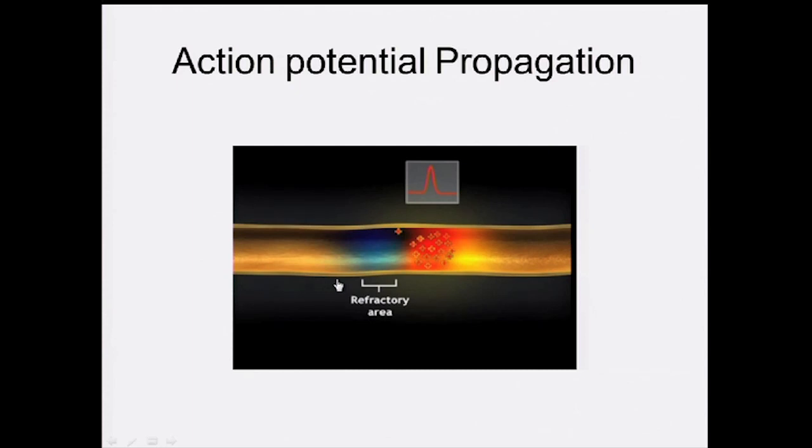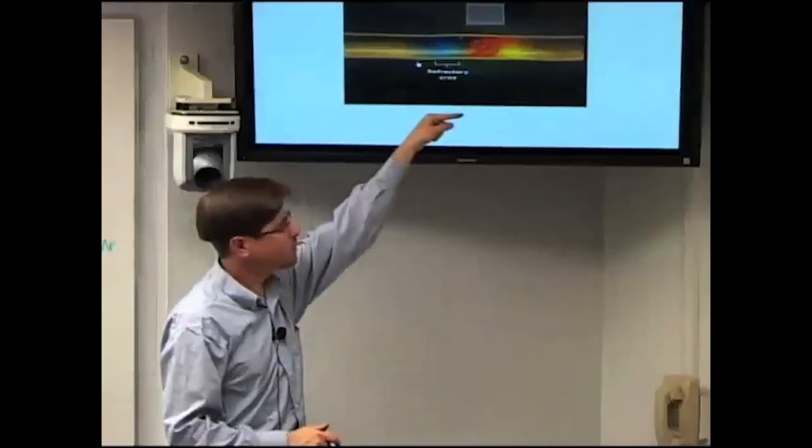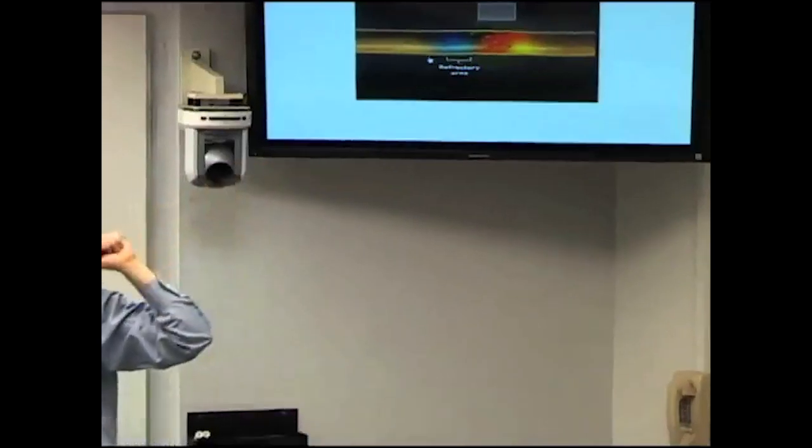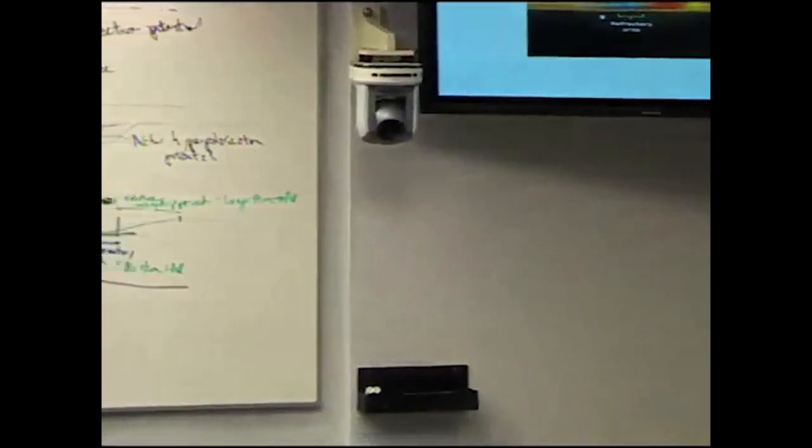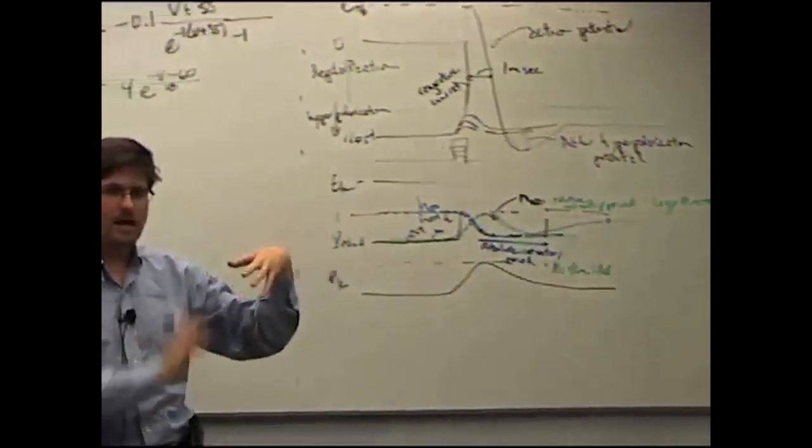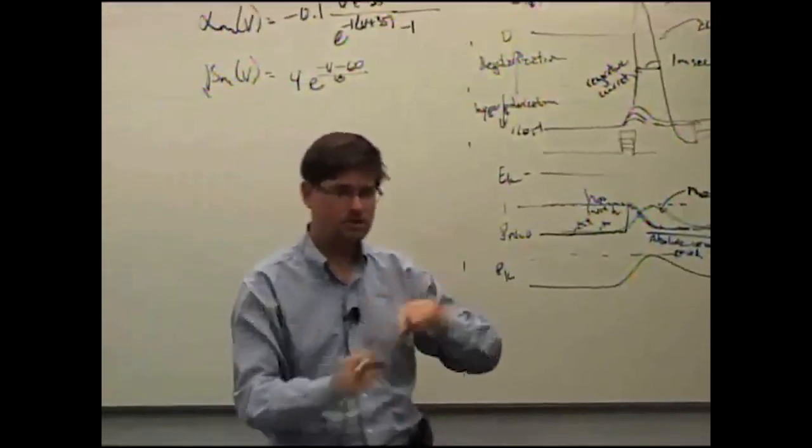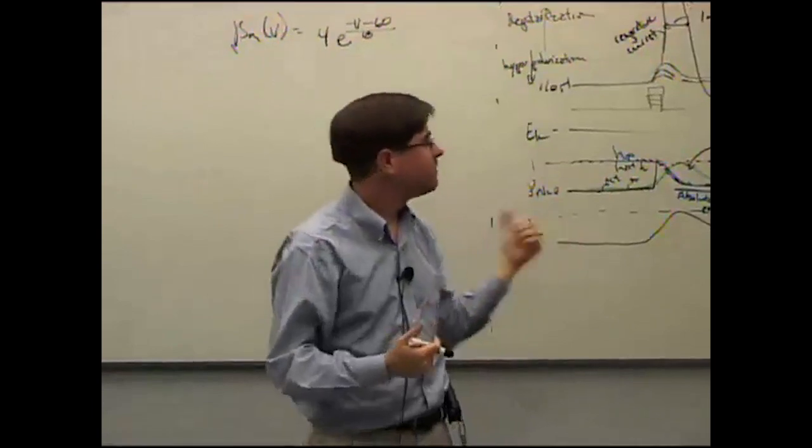This going up towards the soma is called the antidromic, and this one going down is orthodromic. If it starts at the soma, it usually goes one direction, and that's because the soma takes a lot more voltage to get it up to threshold, so it doesn't generally travel up the soma as easily.